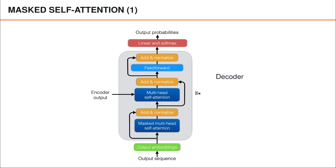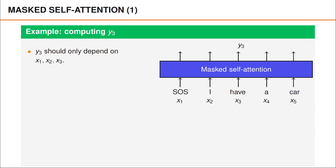Let us now illustrate how the masked multi-head self-attention layer is constructed using an example. This layer receives one input vector for each word in the translation, as illustrated in the figure. If we focus on how we compute the new embedding for y3, we realize that it should only depend on x1, x2, and x3.